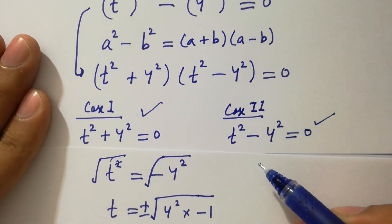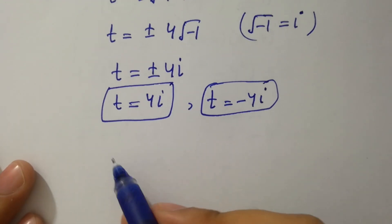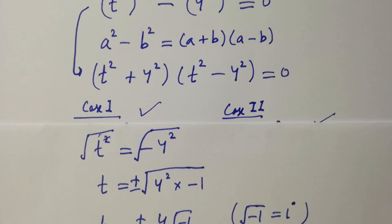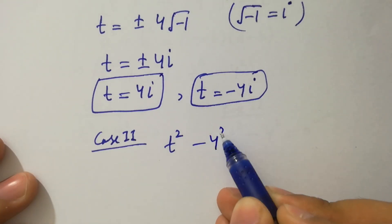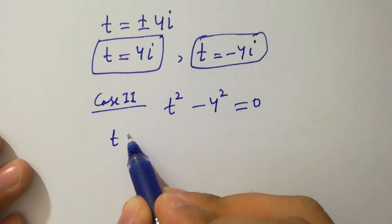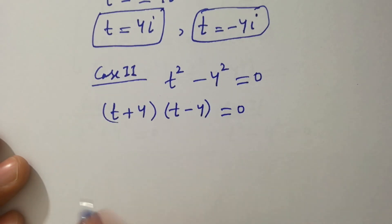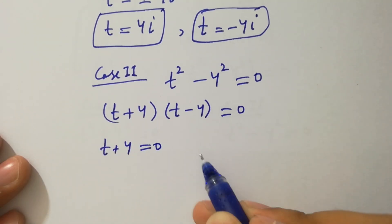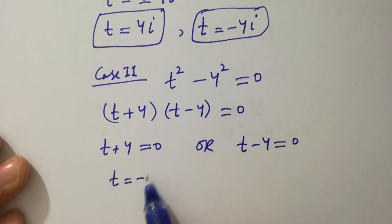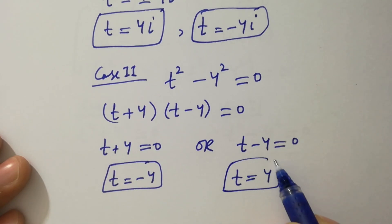From the second case, t squared minus 4 squared equals 0. Applying the formula a squared minus b squared, we have (t plus 4)(t minus 4) equals 0. Either t plus 4 equals 0 or t minus 4 equals 0, giving t equals minus 4 and t equals plus 4.